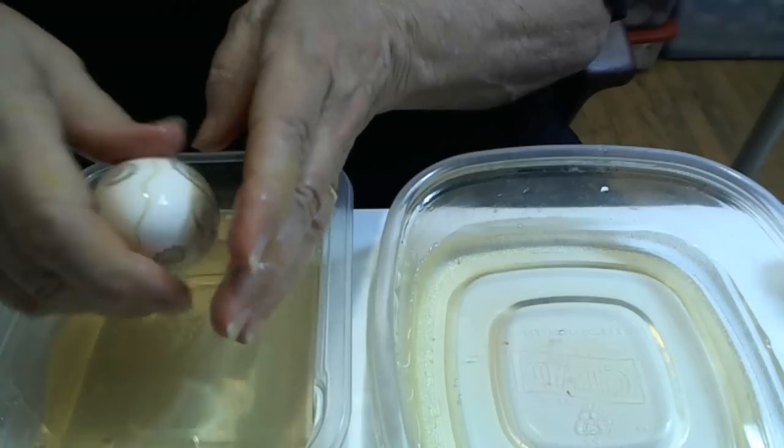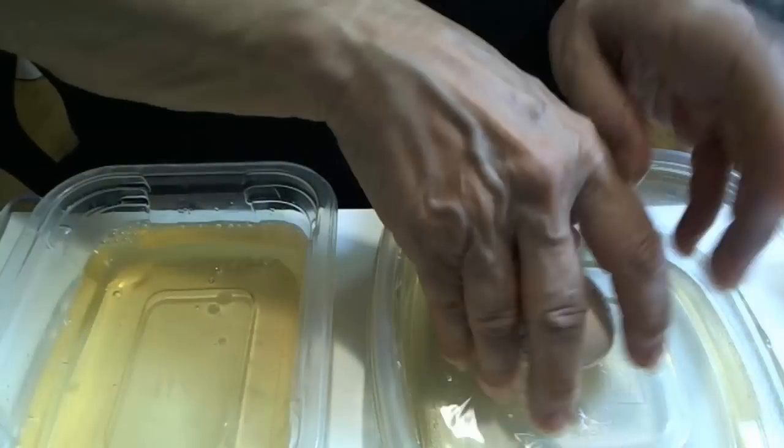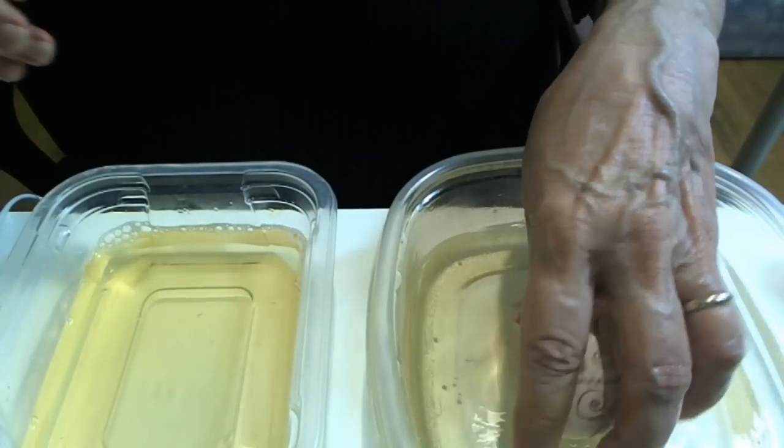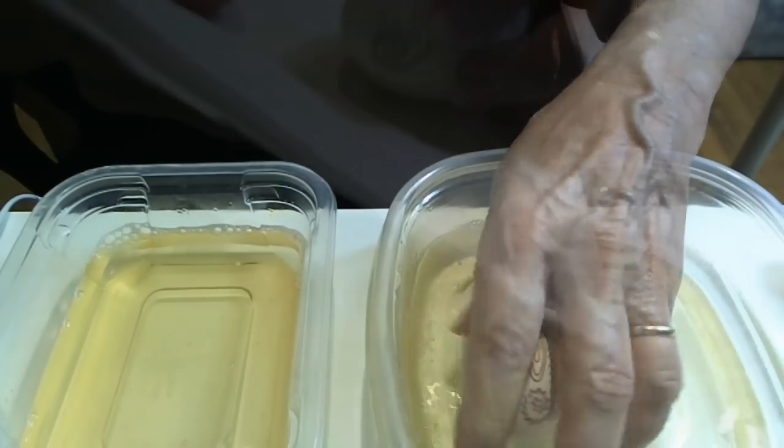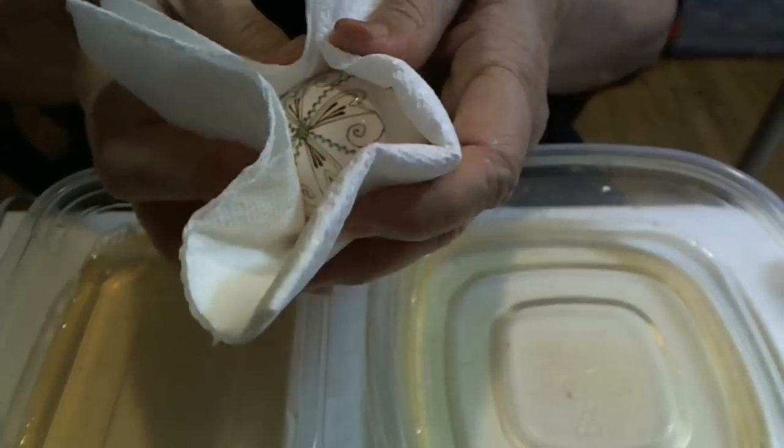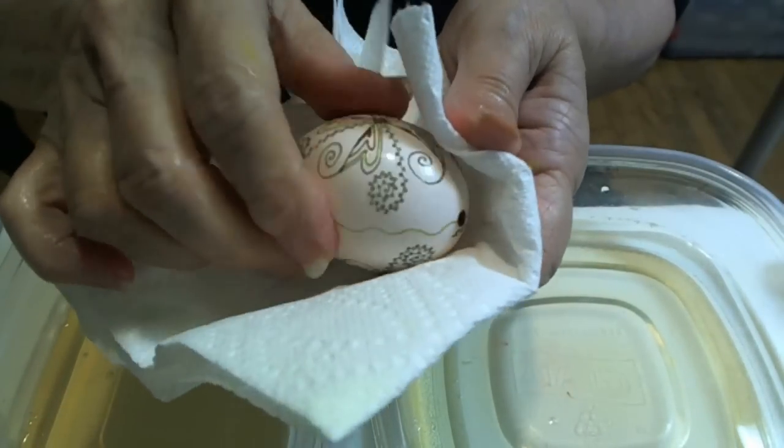Now we have the dye off. What we need to do is get the soap off. So we will put it in a clean tub of water. Now we have removed all the yellow and all the orange dye.